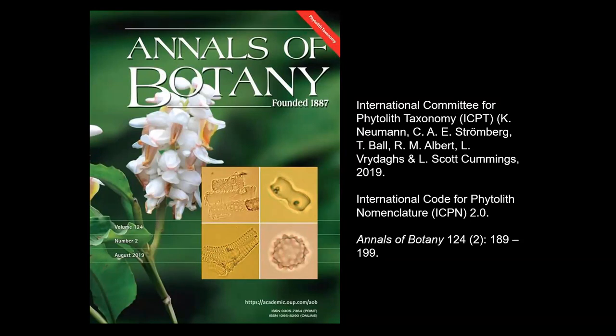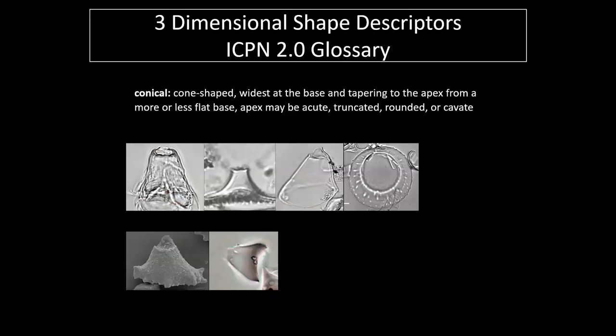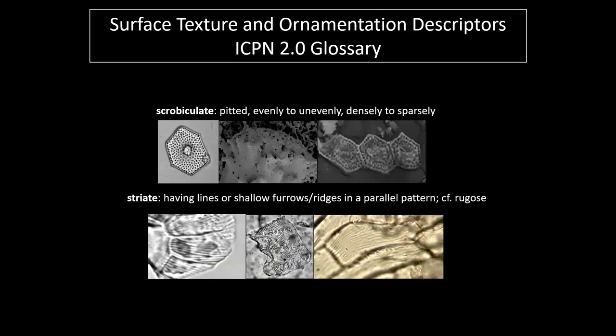This updated version of the ICPN includes revised morphotype names and full descriptions and definitions of the 18 morphotypes included in ICPN 1.0, plus three others commonly encountered in phytolith assemblages from modern and fossil soils, sediments, and archaeological deposits. ICPN 2.0 also includes an illustrated glossary of common 3D terms, 2D margin outline, surface texture, and ornamentation terms for describing phytoliths.